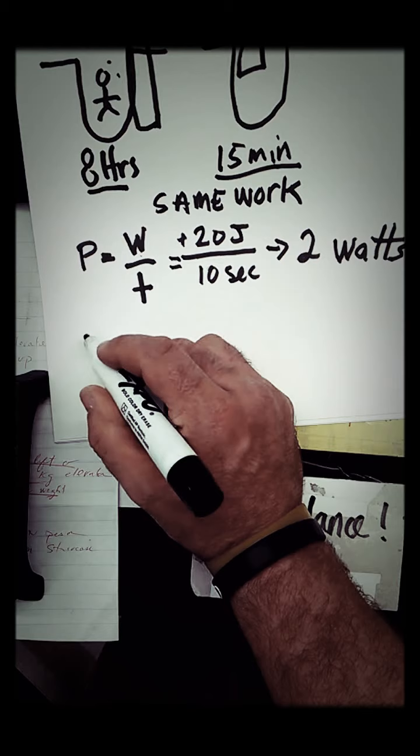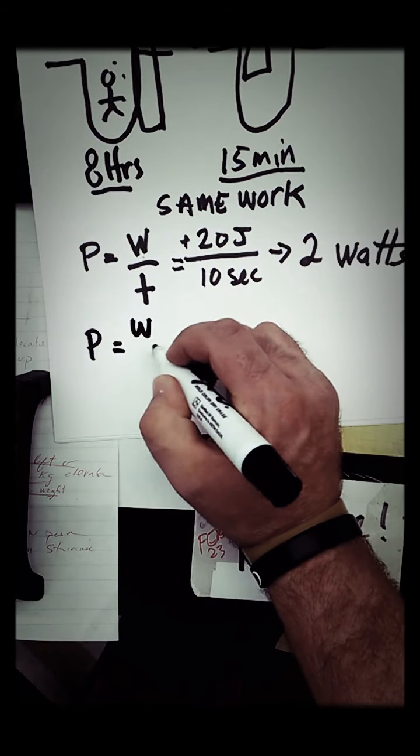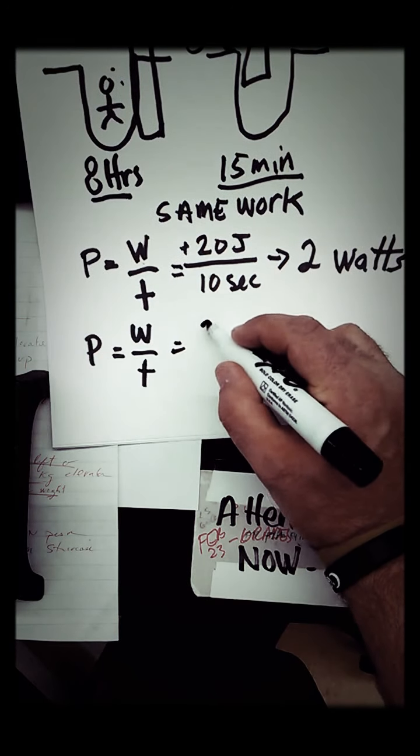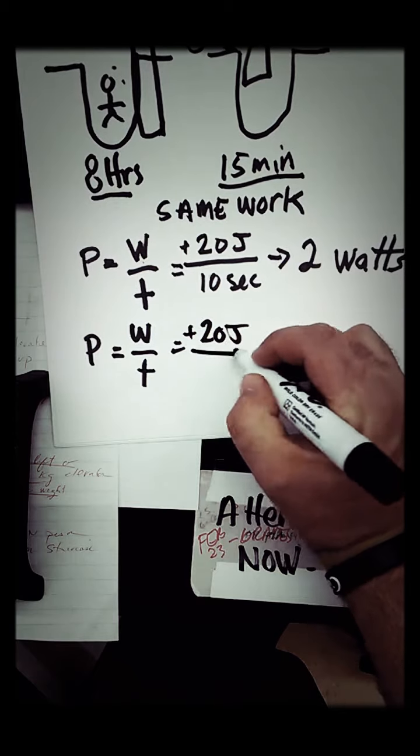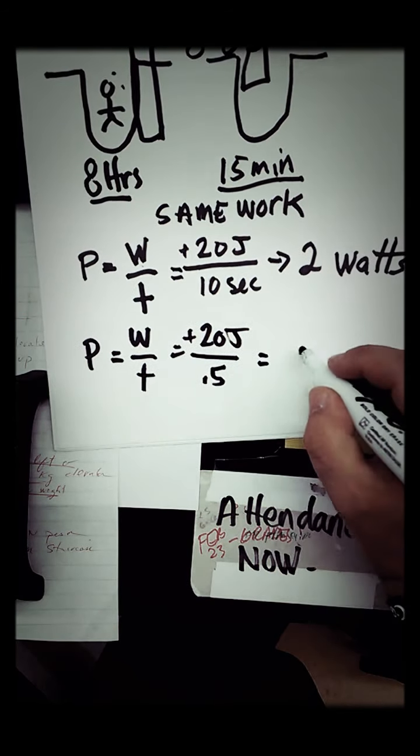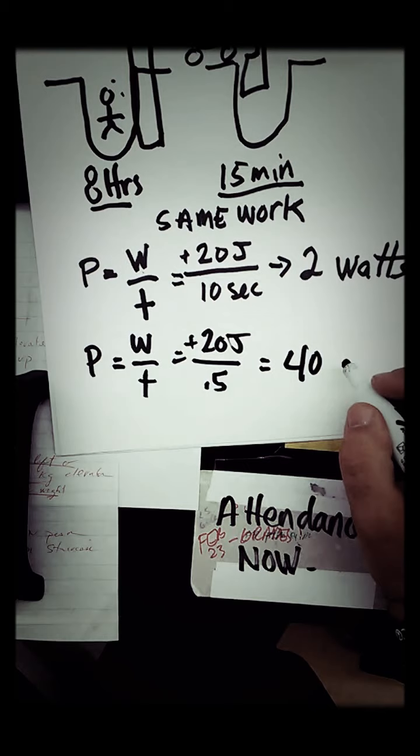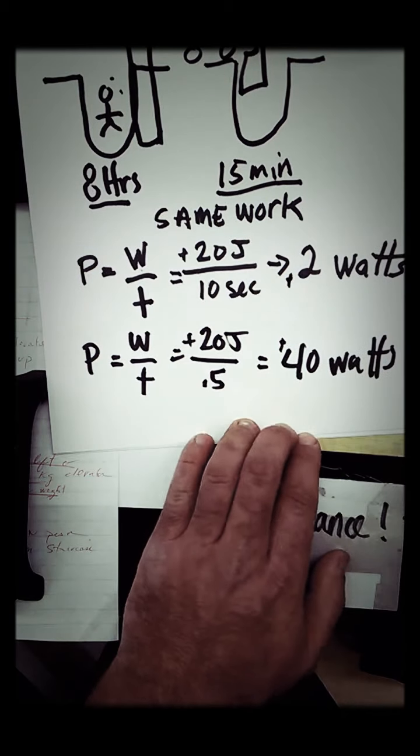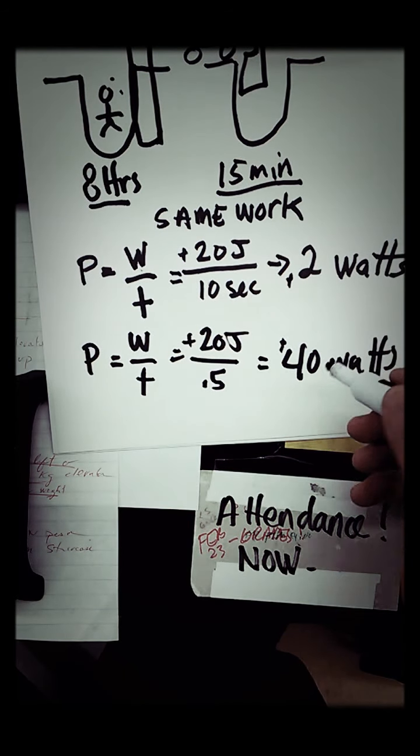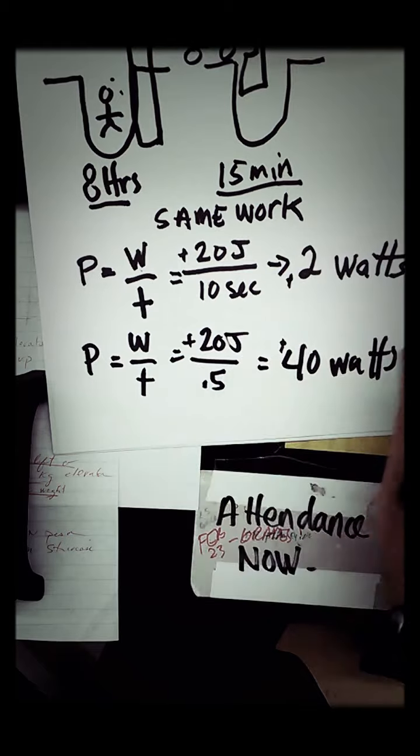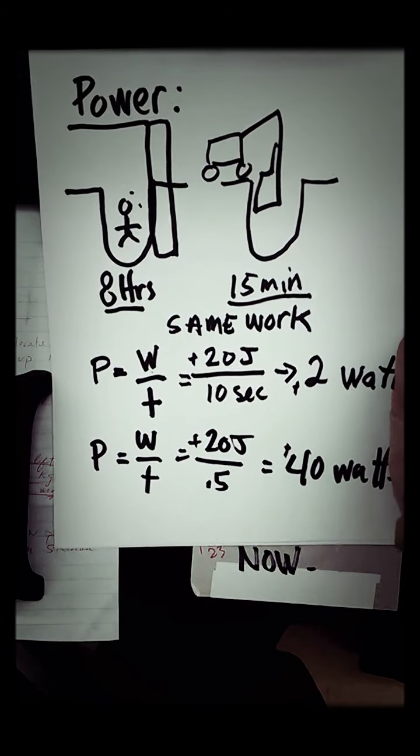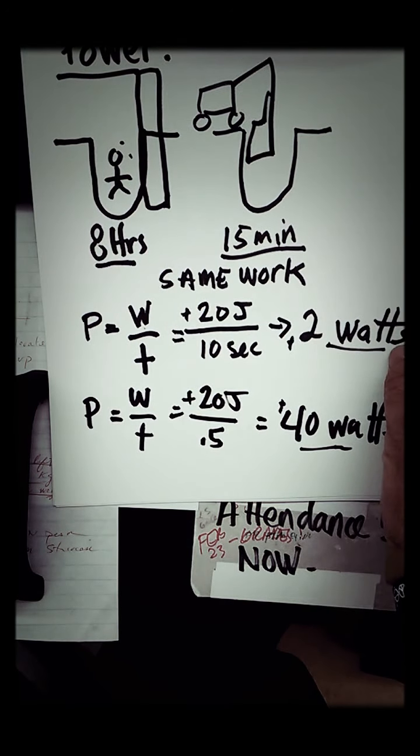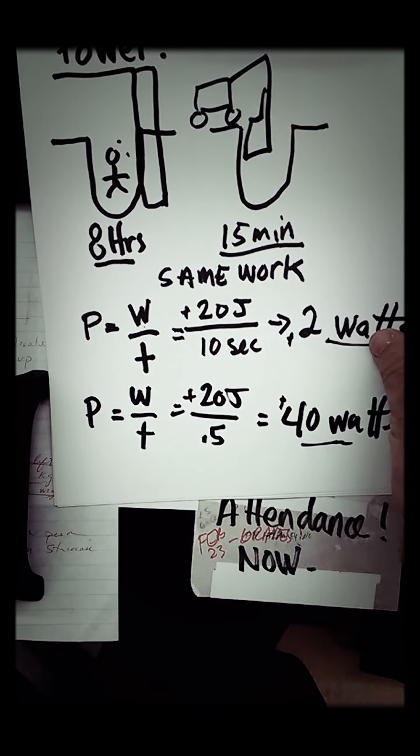So let's see what happens when I decrease the time. Let's say I decrease the time to a half a second. 20 joules over a half a second. 40. 40 watts. So now I went from 2 watts to 40 watts, and the only difference was I decreased my time. So the faster I do something, the more powerful it is.